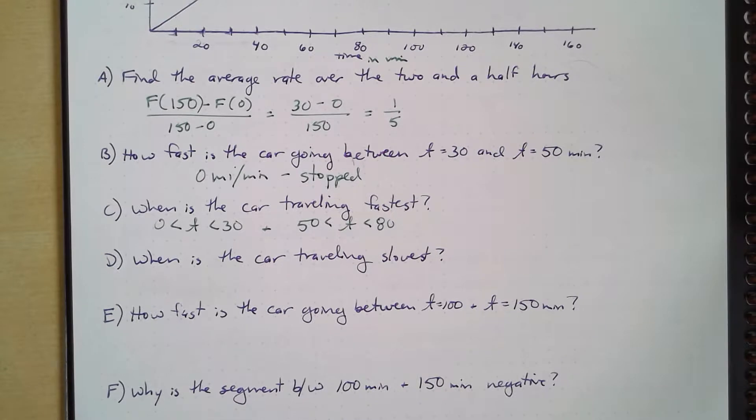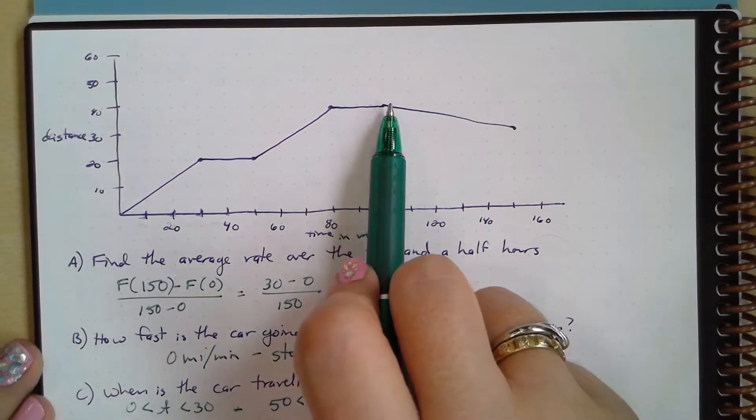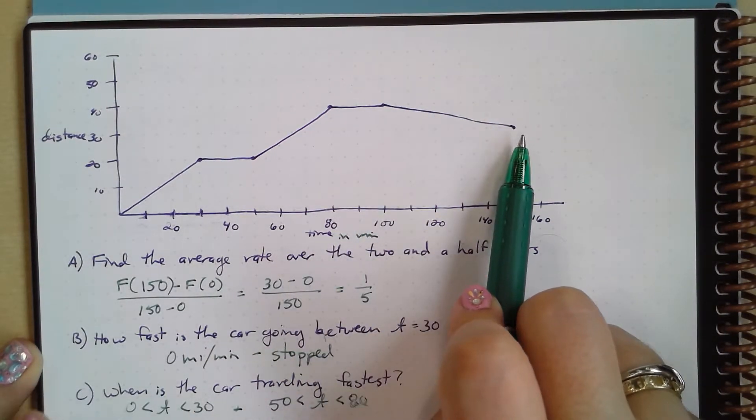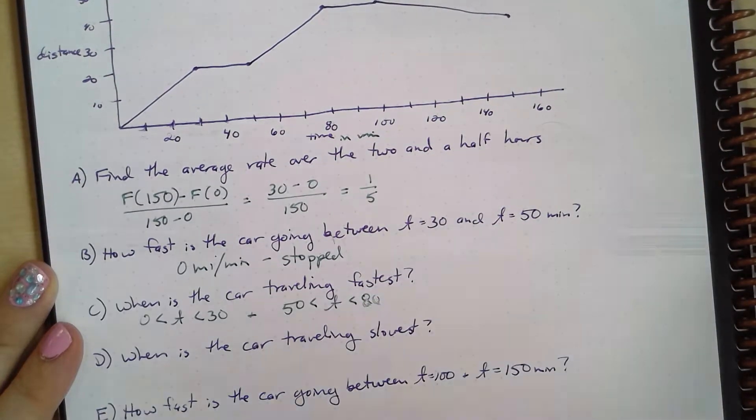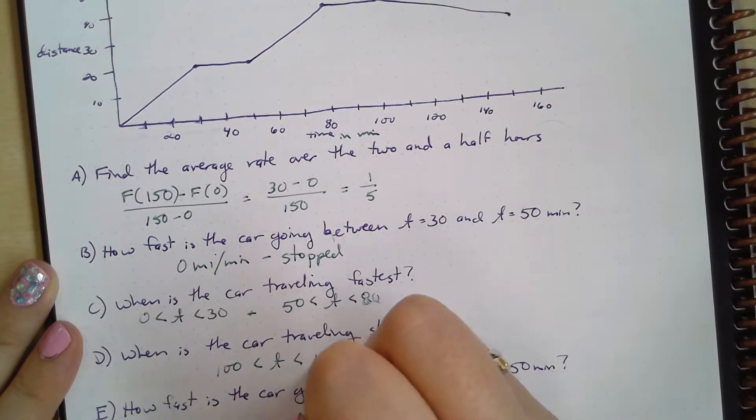When is the car traveling slowest? Well, it looks like it's going the slowest and it's actually traveling, not just stopped, between 100 and 150, right? So when 100 is less than t is less than 150.